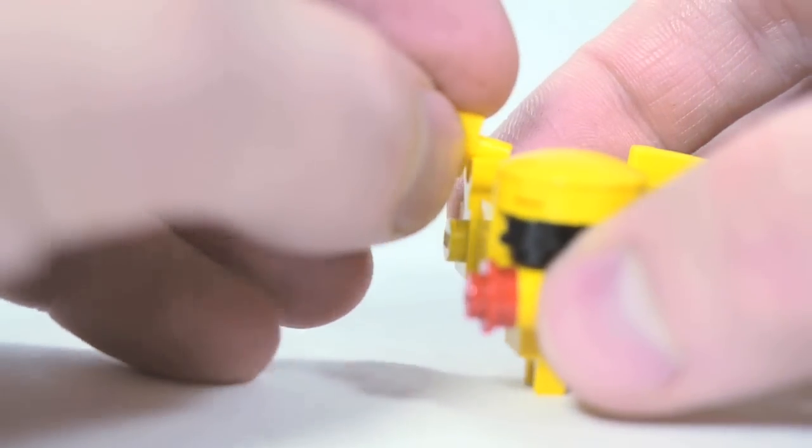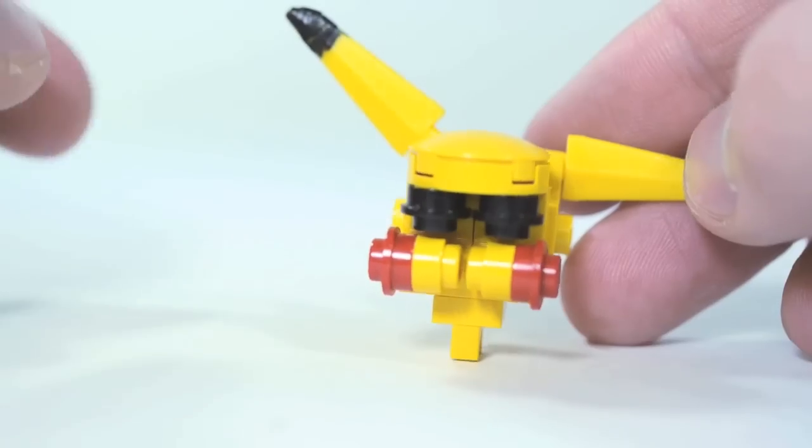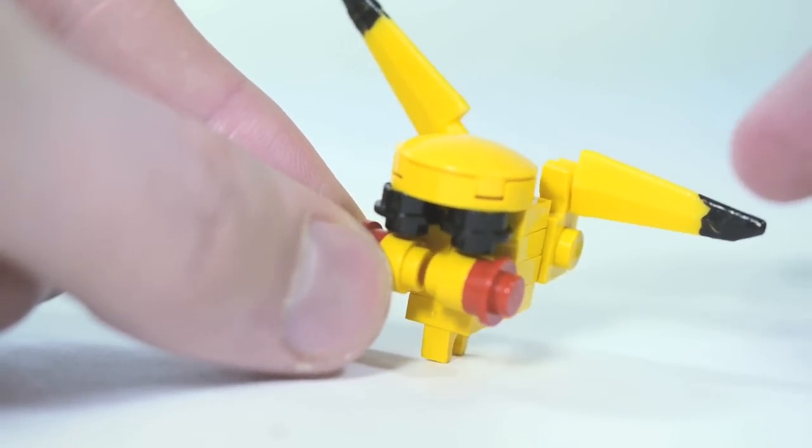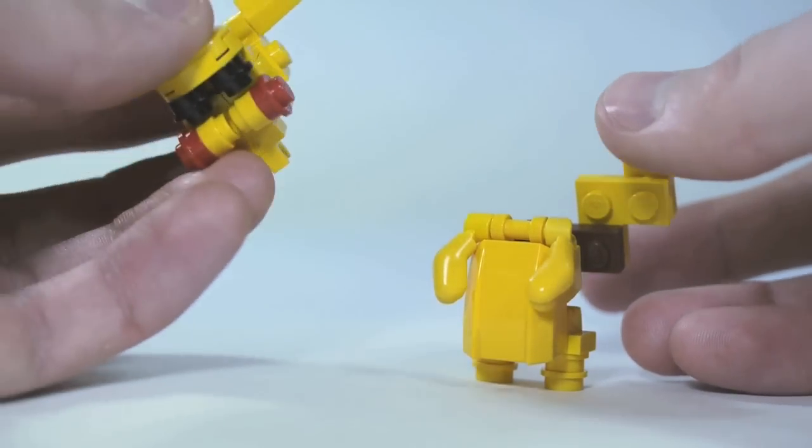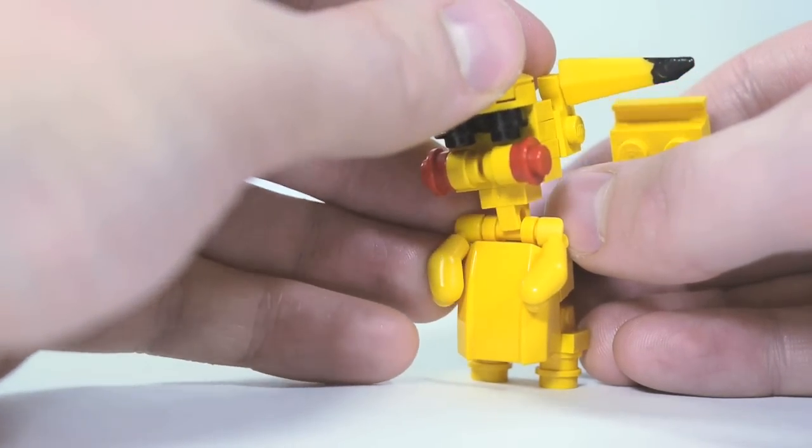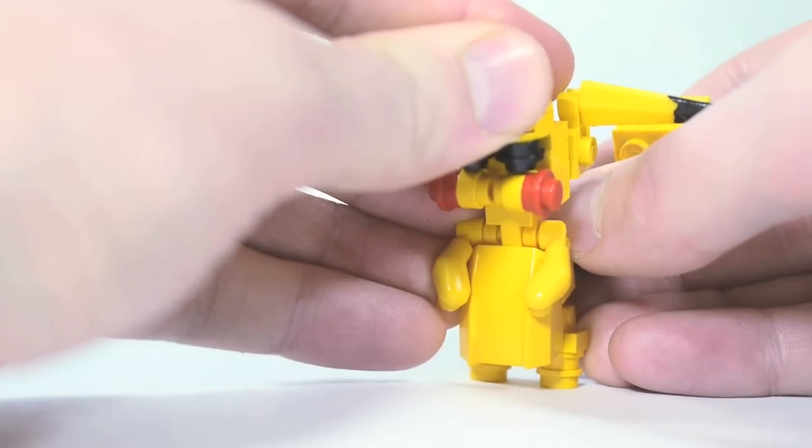And you can put those in the clips, and then twist them up a little bit for different ear poses. Last step, take the body, and connect the head, the clip on the bottom, to that handle in the middle of the body.